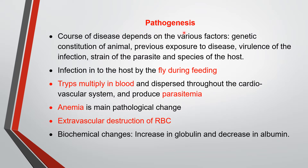Here we see the pathogenesis. There are various types of courses observed in clinical findings. The course of disease depends on many factors: genetic constitution of the animal, previous exposure to the disease — that means immunological status of the animal — virulence of the infection, the strains of the parasite, and species of the host. So many factors are working to decide the course of disease.